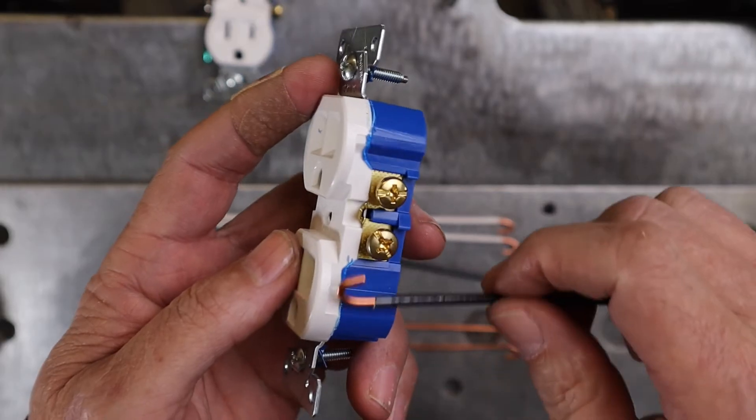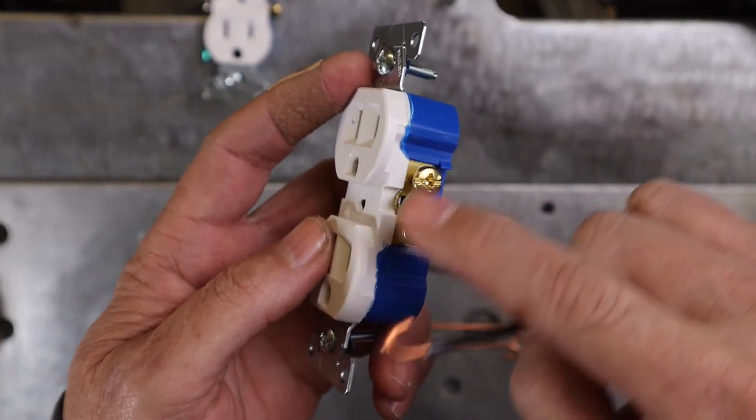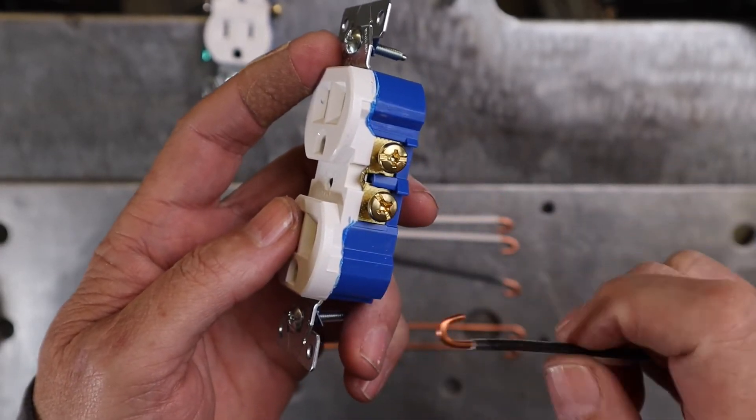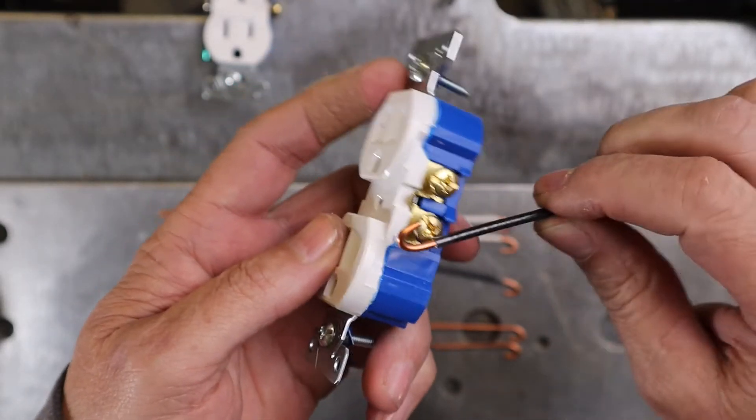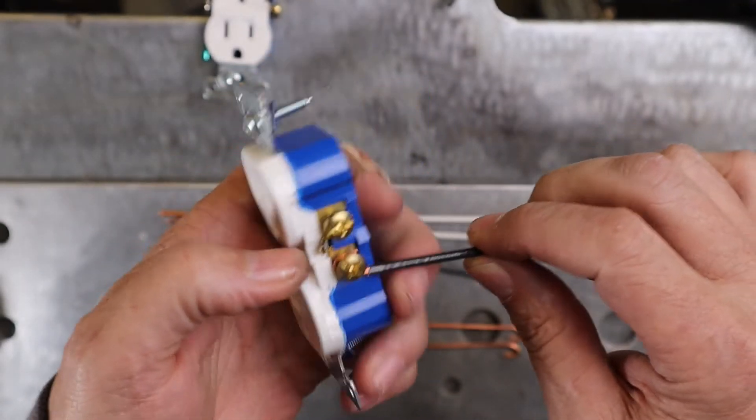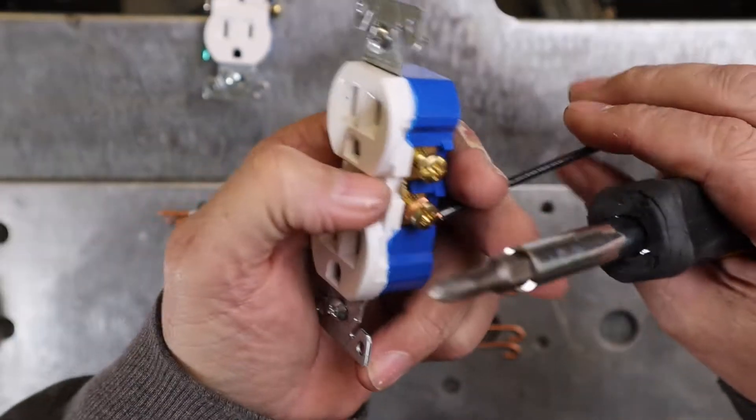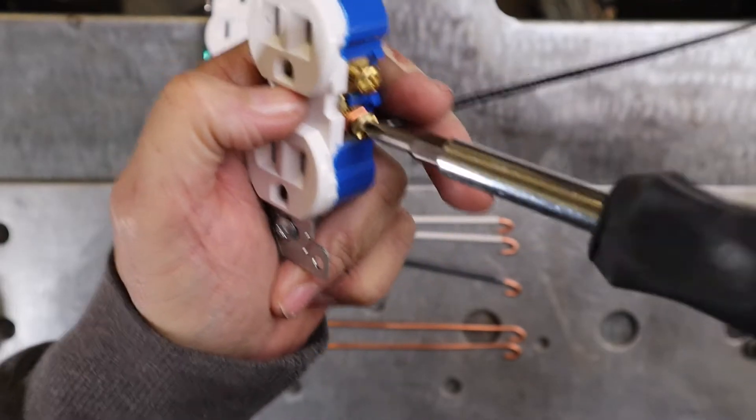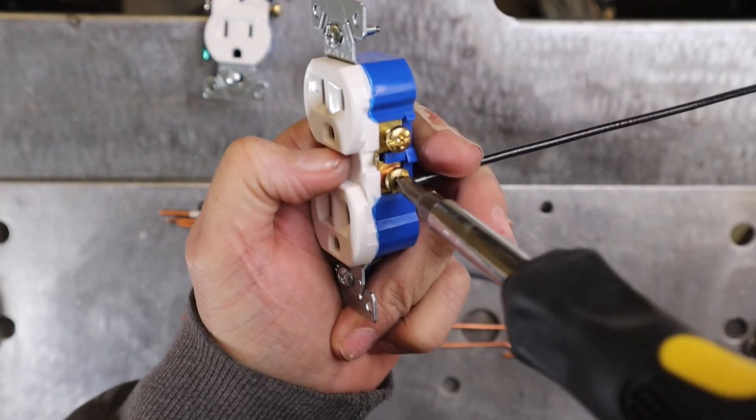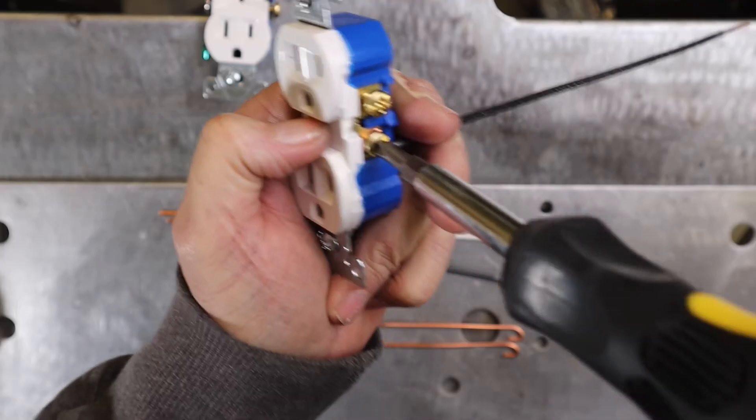Start putting your pigtails on there. Now the way this works with the pigtails, the screws are going to turn to the right to tighten, so you want that hook to be facing around to the right. So when you tighten down on the screw, it's going to try to pull the wire around the screw instead of try to push it off of the screw, if that makes sense.